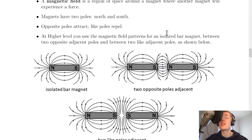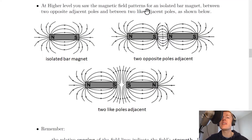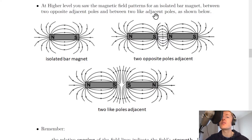Just like there are two types of charge — positive and negative — magnets have two poles which are the north and south poles. Opposite poles attract and like poles repel each other. At higher level you saw the magnetic field patterns for an isolated bar magnet, between two opposite adjacent poles, and between two like adjacent poles as shown below.